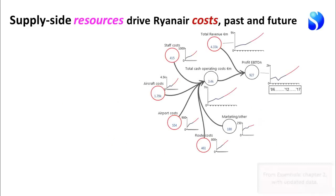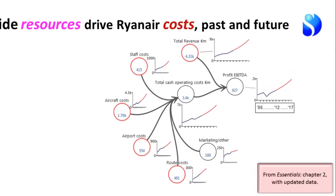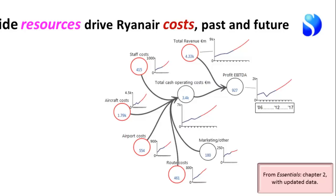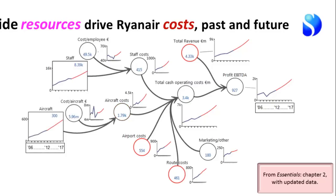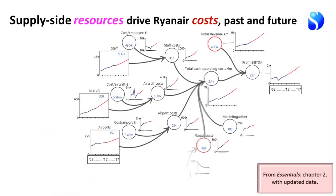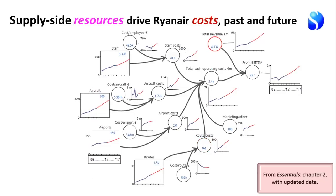We can do the same kind of thing with the supply-side resources of the business. The total cash operating costs has been the sum of cost items over all the years of history. Staff costs come from the number of staff employed; aircraft costs from the number of aircraft operating; airport costs from the number of airports served; and route costs from how many routes are operated — this is predominantly air traffic control driving costs per route.